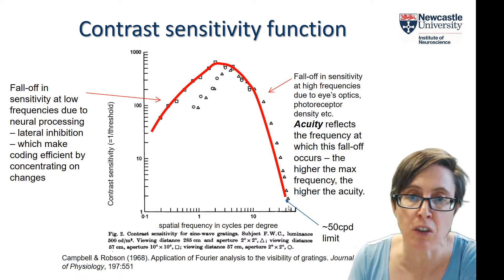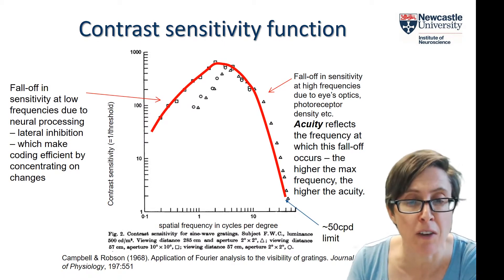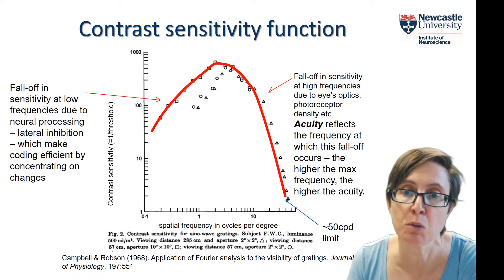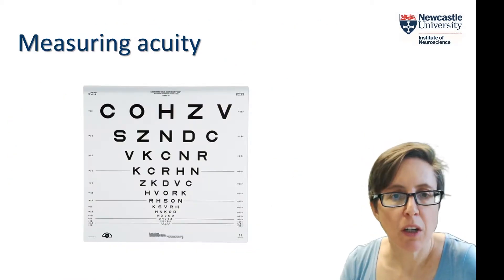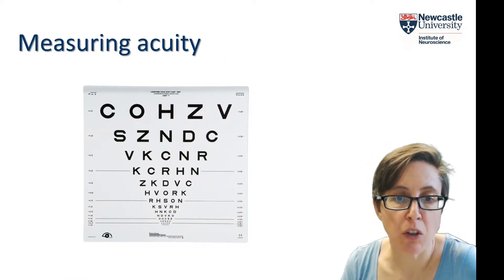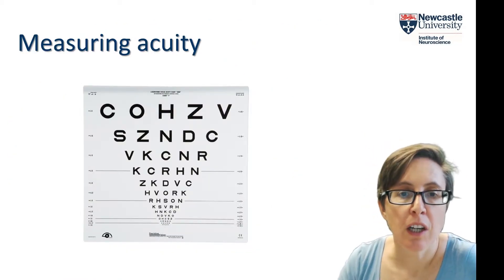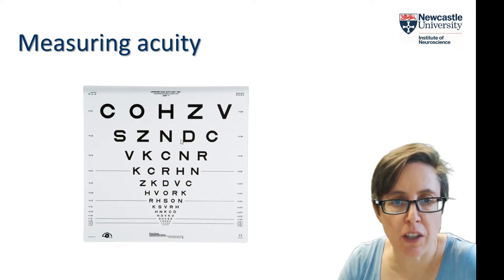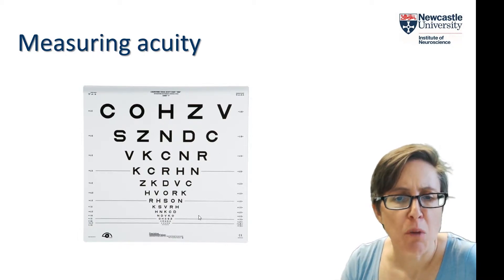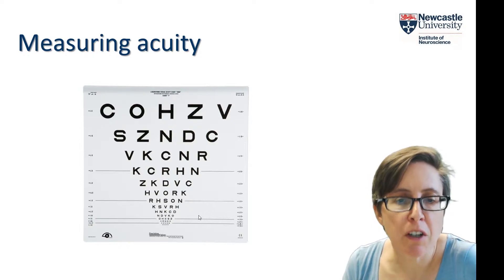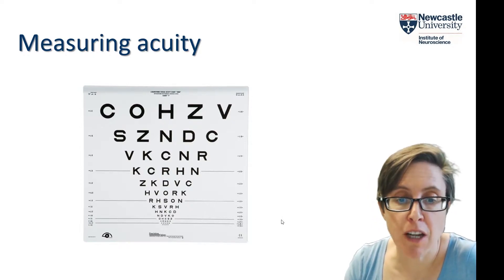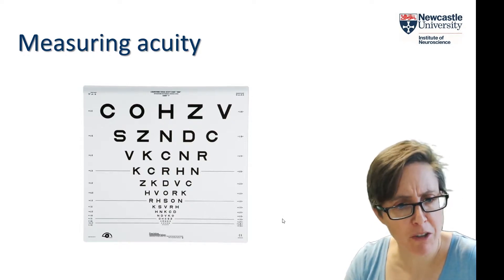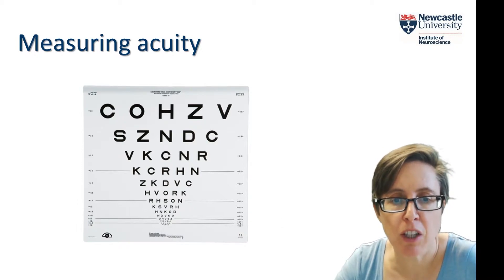Of course it depends on the individual and on factors like luminance. When you go to the optician to measure your acuity, they'll typically use letter charts to find the smallest letters you can read. But in the lab we really prefer the contrast sensitivity function with gratings as a more precise way of measuring acuity.